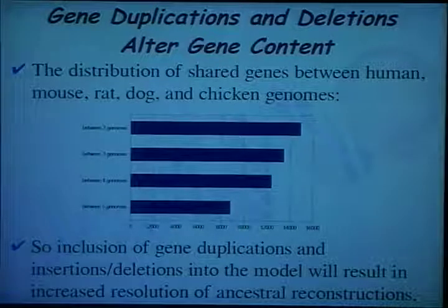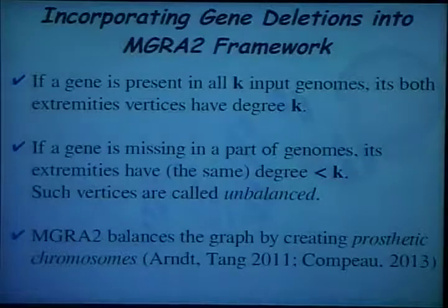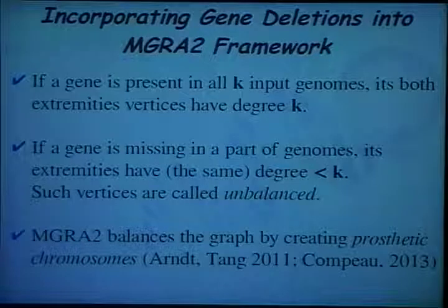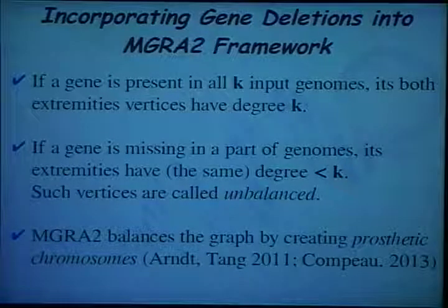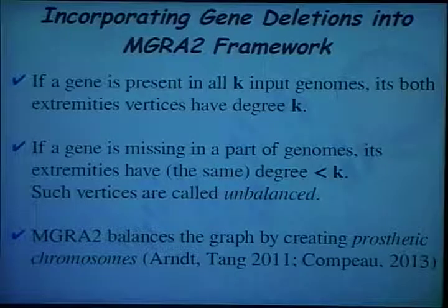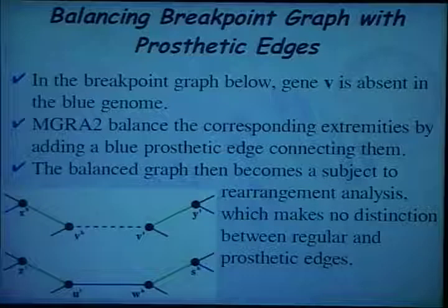It becomes important to incorporate gene duplications and gene deletions into the model. In the MGRA framework, if a gene is present in all K input genomes, the degree of corresponding vertices is K. However, if a gene is missing in some genomes, the degree of those vertices is less than K — we call such vertices unbalanced. MGRA balances the graph by creating what are called prosthetic chromosomes, generalizing prior studies of rearrangements with indels from two genomes to more than two.